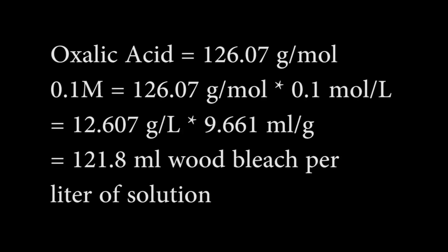If we multiply the molar mass of oxalic acid by 0.1 — because that's the molar concentration we need — and then multiply that by the number of milliliters of wood bleach per gram of oxalic acid, that tells us we need 121.8 milliliters of wood bleach per liter of solution.